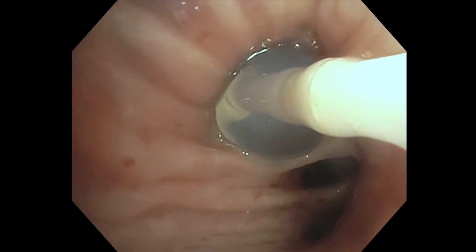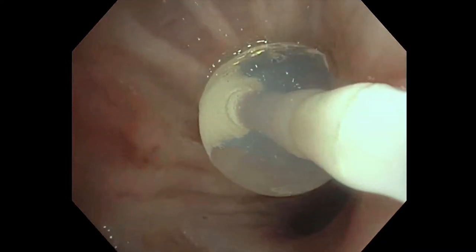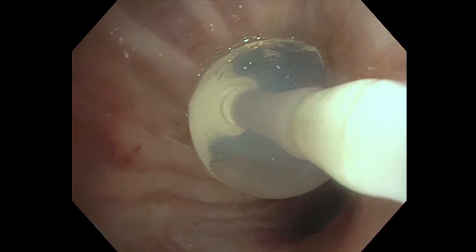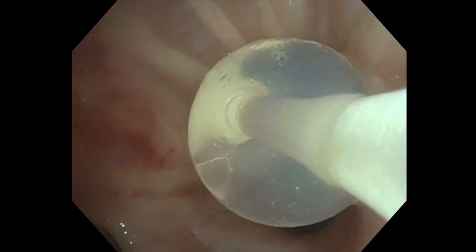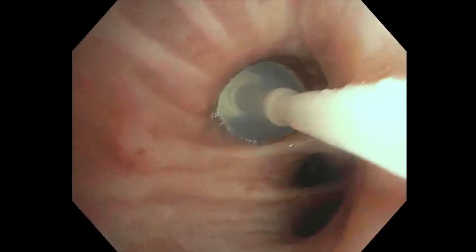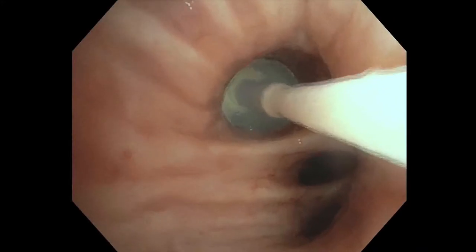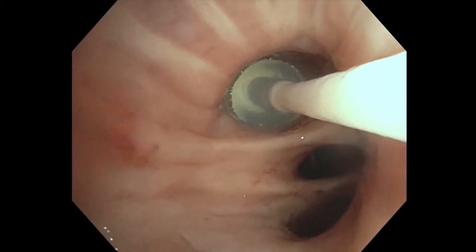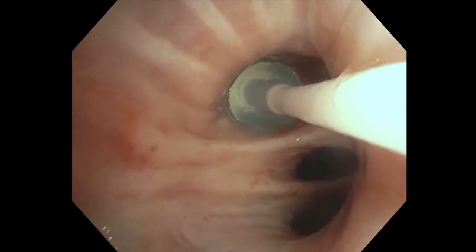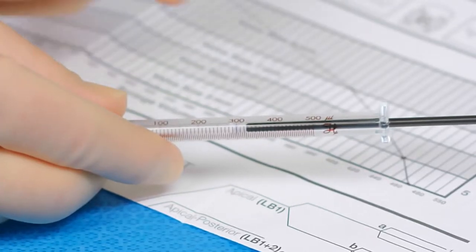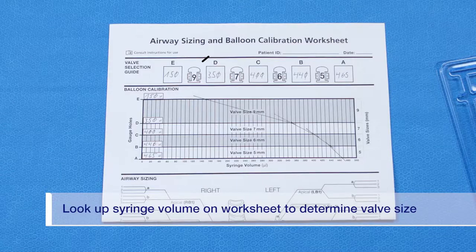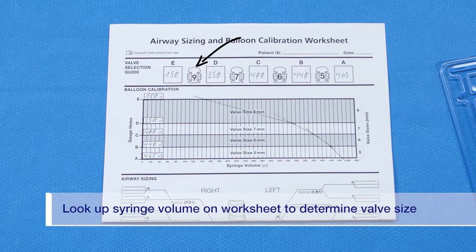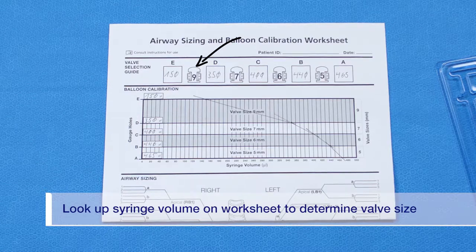The bronchoscopist should feel a slight tug when moving the catheter back and forth to assure a good fit, taking care not to over or under inflate, as this can result in the selection of an improper valve size. Using the worksheet that was filled out during balloon calibration, look up the syringe volume on the worksheet table and select the indicated valve size.